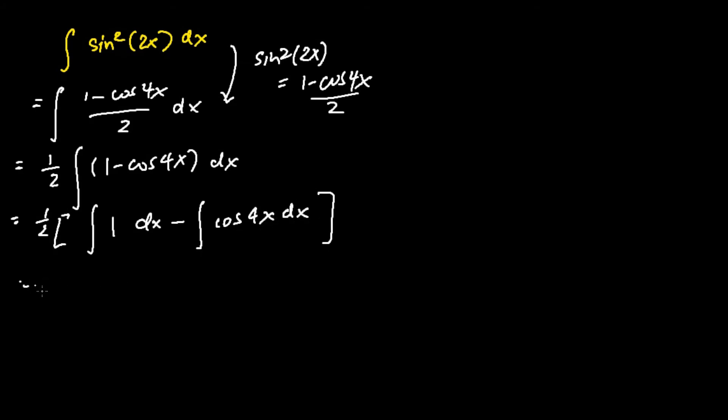Then I can perform my integration. The integration of 1 dx is just x, whereas the integration of cosine 4x dx is 1 quarter sine 4x plus c.